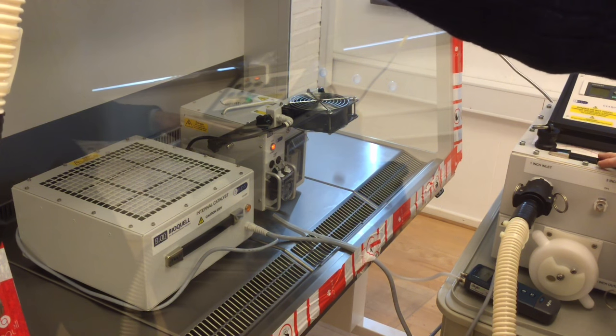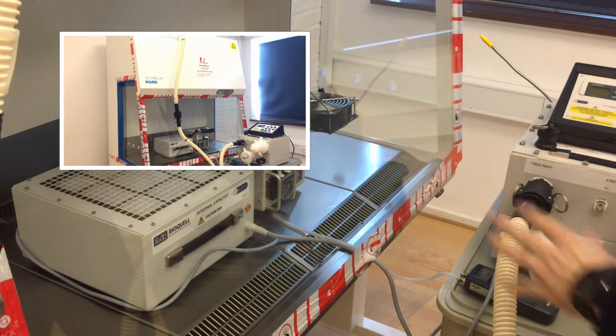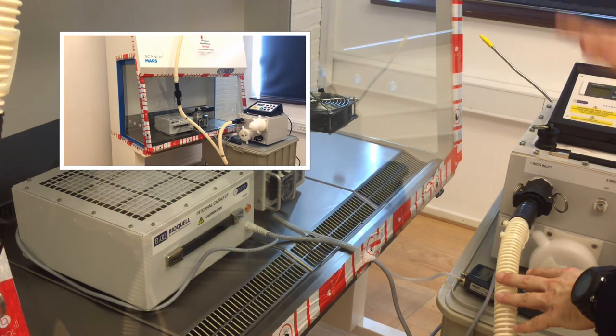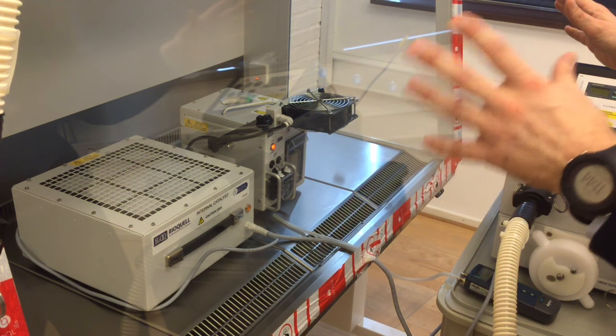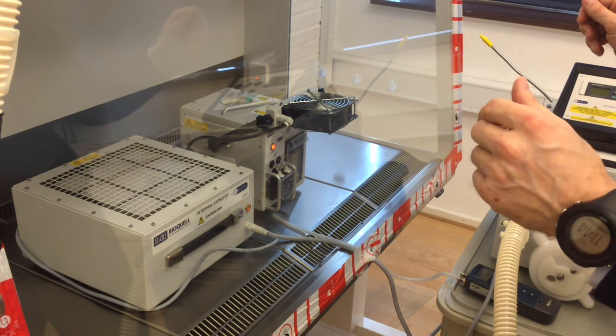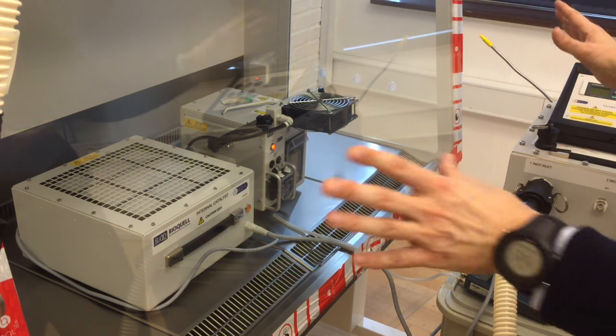And by taking air from the inside of the cabinet to this external catalyst, we are also making sure that we have hydrogen peroxide through the exhaust filter. So the whole of the cabinet is decontaminated.